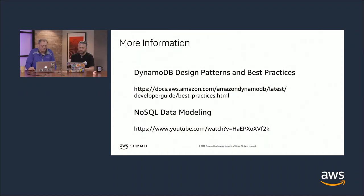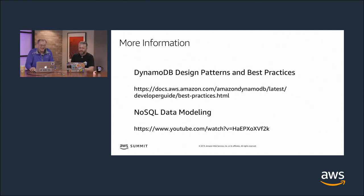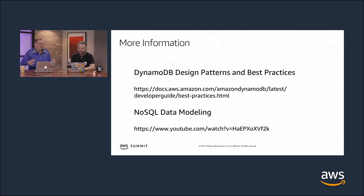For more information, there's the DynamoDB Design Patterns Best Practices in our documentation — I definitely recommend searching for that. It describes in detail all these patterns: right sharding, GSI overloading, vertical partitioning. There's also the session from last re:Invent on advanced design patterns for DynamoDB, which covers how to break down the entity relationship model and move data into a shape that supports your application's access patterns. All data is relational — just because it's a NoSQL database doesn't mean we don't have relational data.